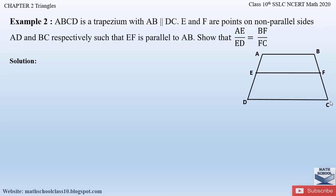First of all, write down what is given in the question. Given: AB is parallel to DC, and EF is parallel to AB.